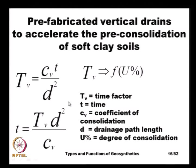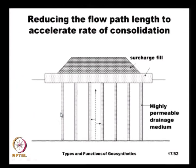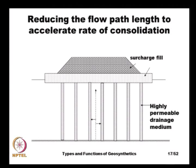If we reduce the drainage path length d by a factor of 2, the time for consolidation reduces by a factor of 4, because time is directly proportional to the square of the drainage path length. For a thick clay soil with no drains, the water has to travel the full soil thickness before escaping, taking a very long time to consolidate.